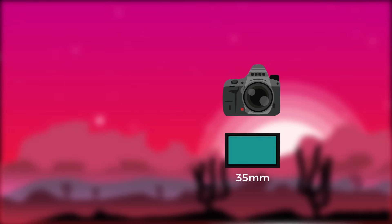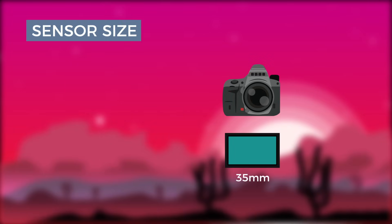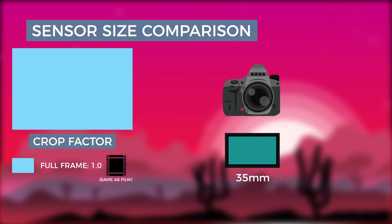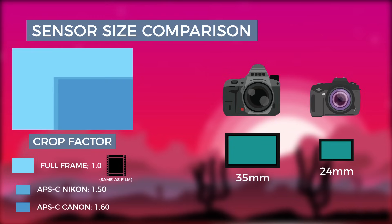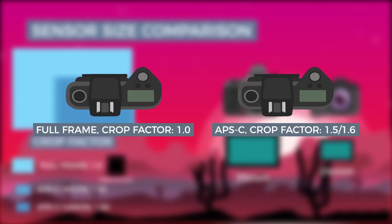Full frame cameras do not have any crop factor, since they operate on the standard 35 millimeter format used in the days of film. APS-C sensors, however, have a crop factor of 1.5 for Nikon or 1.6 for Canon. What this means is any lens attached to an APS-C camera will need to have its focal length multiplied by either 1.5 or 1.6 to get its effective focal length.